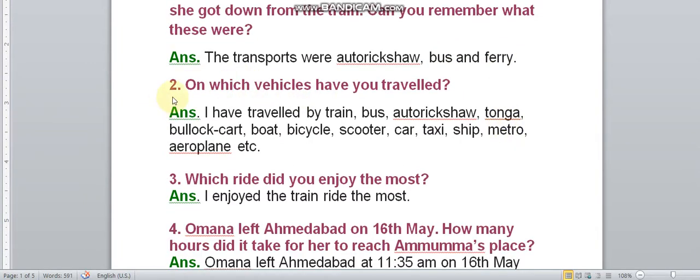Question 2: On which vehicles have you travelled? This is an example. You can write any of these vehicles. Answer: I have travelled by train, bus, auto rickshaw, tanga, bullock cart, boat, bicycle, scooter, car, taxi, ship, metro, aeroplane etc. You can write any vehicles you have travelled.